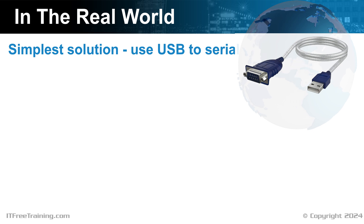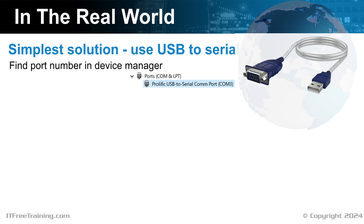In the real world, the simplest solution to access the device using the serial port is to purchase a USB to serial cable. This is a lot simpler than using a serial port header, even if one is available. Once you plug in the USB to serial cable, have a look at Device Manager to find out which COM port it is using. In this example, the port being used is number 3. Thus, if I was using PuTTY, I would need to enter COM 3. If you unplug the USB serial cable and plug it back in, it may change to a different COM port number, so don't expect it to always be the same if you plug it into a different USB port.